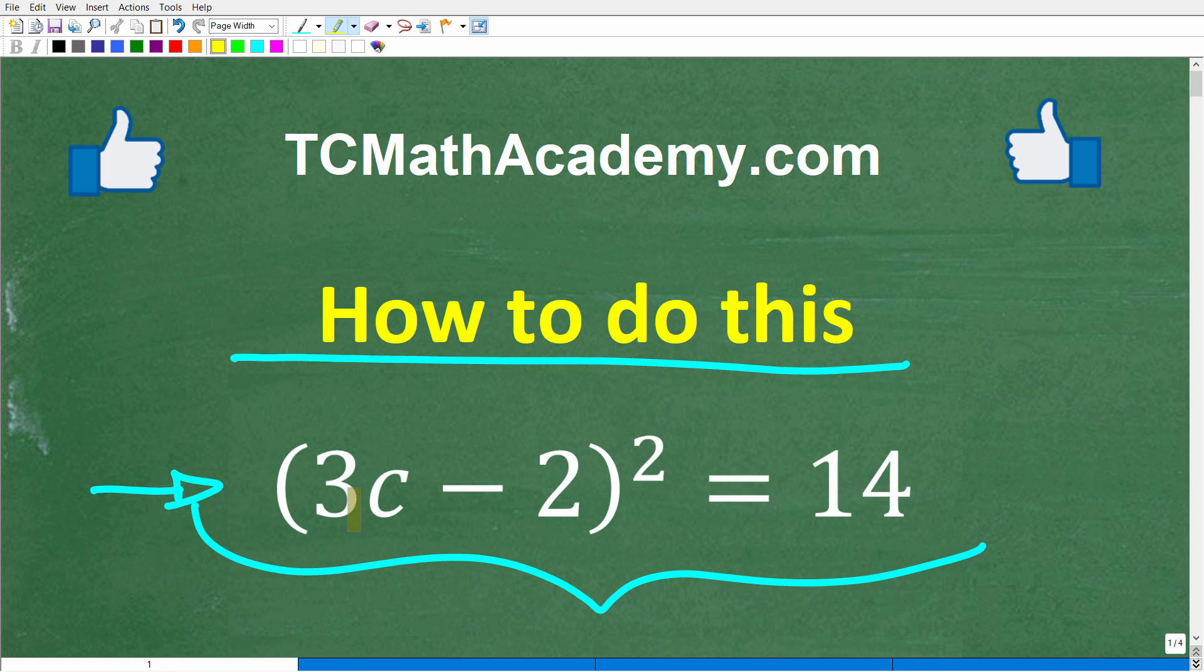Let's take a look at the actual problem. We have 3C minus 2 squared is equal to 14. We're going to solve for the variable C. If you can do this, put your answer into the comments section.